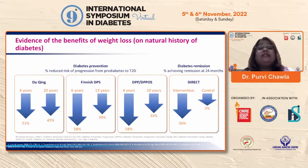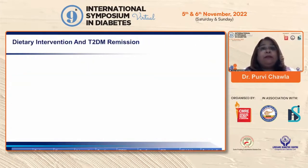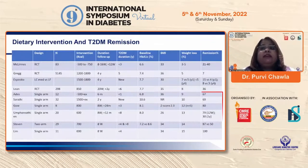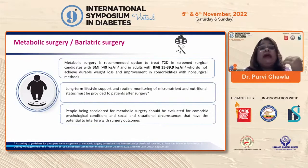The DiRECT trial has been a landmark trial in diabetes remission. It was aimed at a 15 kg weight loss using total meal replacement and achieved diabetes remission very well. Many studies highlight that more the weight loss, the higher the diabetes remission. We also know that weight loss with lifestyle intervention impacts the interplay of hormones affecting energy metabolism.